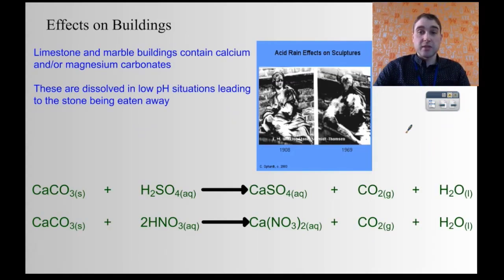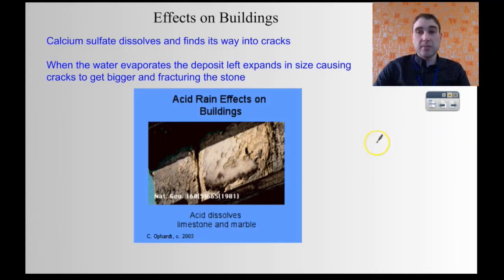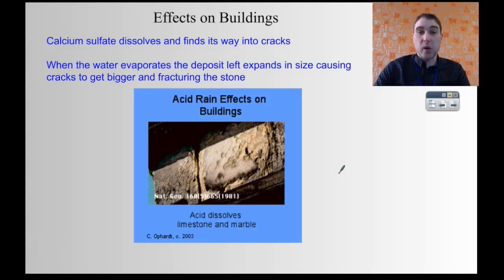Acid rain also has effects on the built environment. Limestone and marble are made out of calcium or magnesium carbonate, and if you expose any acid to them you get a reaction: a metal carbonate with an acid produces a salt, carbon dioxide, and water. You can see this very dramatically in this picture of a statue — from 1908 and from 1969 — where all the features have been washed away. The acid rain has dissolved away the features. The calcium sulphate produced can dissolve and find its way into cracks inside buildings, and when the water evaporates you're left with a deposit that expands in size, leading to cracks and fracturing.